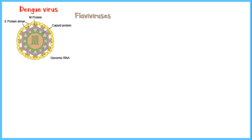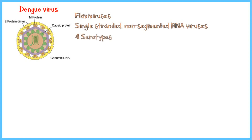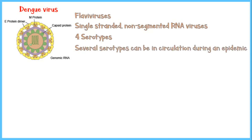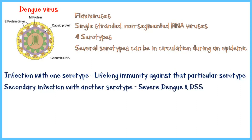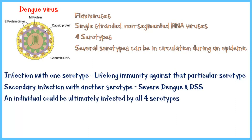Dengue virus belongs to the group of flaviviruses, which contain a single-stranded, non-segmented RNA molecule as genetic material. Four serotypes of dengue virus have been identified, and several serotypes can be in circulation during an epidemic. Infection with one serotype gives lifelong immunity against that particular serotype. However, secondary infection with another serotype can cause severe dengue and dengue shock syndrome within the same person. Ultimately, an individual could be infected by all four serotypes of the virus.